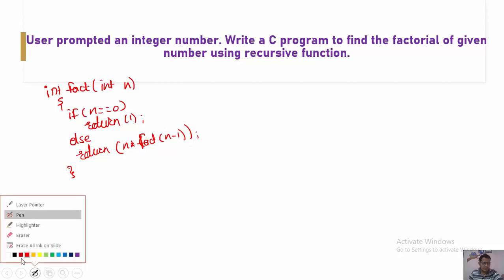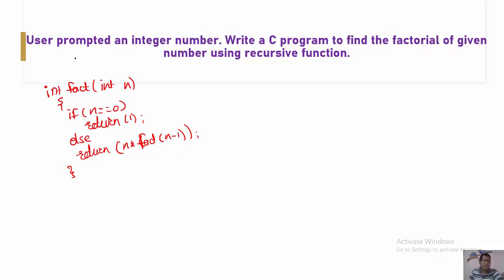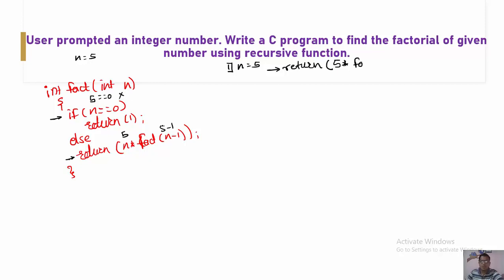This is the function. Now let us consider step by step — the user enters n equals 5. In the first call, the value of n is 5. It goes inside and checks whether n equals 0 — whether 5 equals 0 — no, it jumps to the else statement. So it calls return 5 multiplied with fact of 5 minus 1, which is fact of 4.